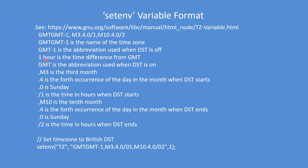GMT minus one is the abbreviation used when daylight saving time is off, and the minus one denotes the time difference between GMT and GMT minus one — you can put positive and negative numbers there. GMT is the abbreviation used when daylight saving time is on. M is month: month three is March. Day zero is Sunday, day one is Monday, day two is Tuesday, day three is Wednesday. So daylight saving turns on on the fourth Sunday in March at 0100 hours.